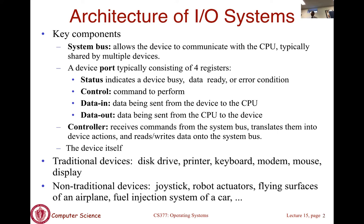A typical IO device uses what is called port-mapped IO, and later we'll see a different method called memory-mapped IO. Assuming a port-mapped IO architecture, each device is assumed to have four registers for communication. This includes the status register, which conveys the status of the device to the processor — the status could be busy, ready, or an error. There's a control register where the CPU writes the control command to the IO device, typically a read or write command. Then there's a data-in register for sending data from the device to the CPU and a data-out register where data is sent from the CPU to the device.